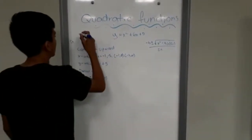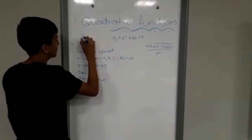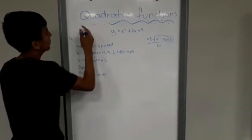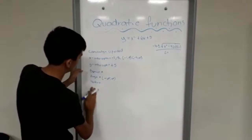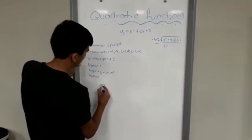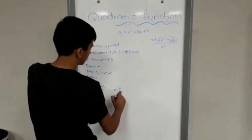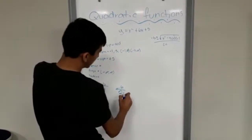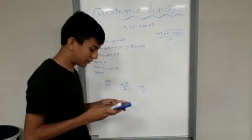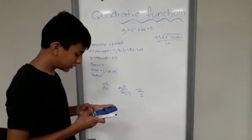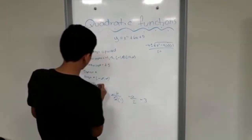And the vertex: we're going to find it using minus b divided by 2a. So minus b — b is the second term, minus 6 — divided by 2 times 1, which is a. So minus 6 divided by 2. Using a calculator, minus 6 divided by 2 is minus 3. So the vertex x-coordinate will be minus 3.